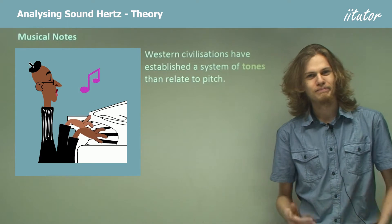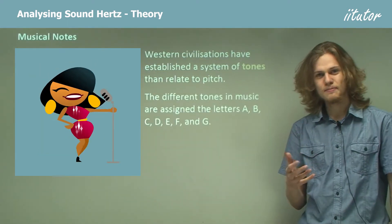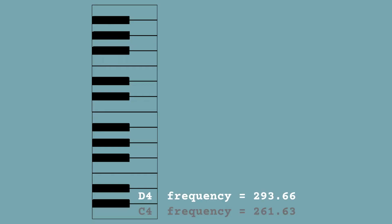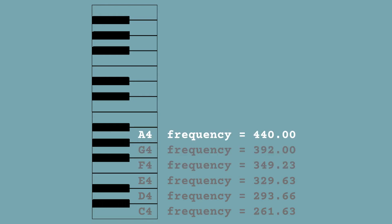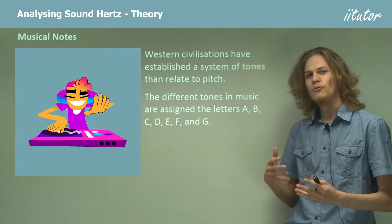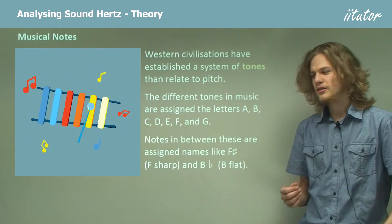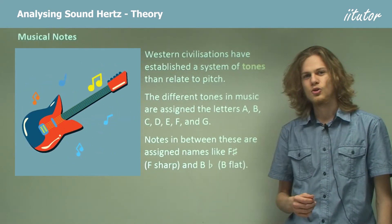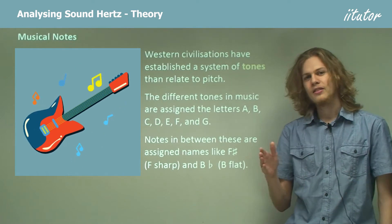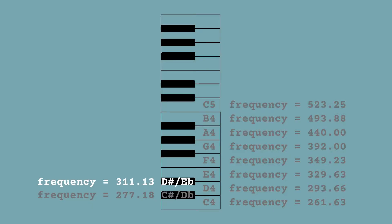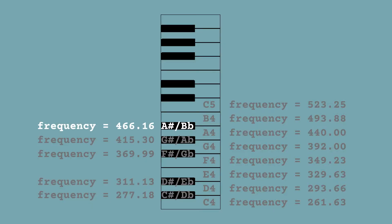It turns out that Western civilizations such as our own have established a series of tones that relate to pitch. The different tones in music are assigned different letters: A, B, C, D, E, F, G. These represent the different tones in a musical scale. There are notes in between these that are assigned names like F sharp or B flat. So if we have C and D, then in between we'll have C sharp or D flat.